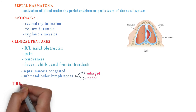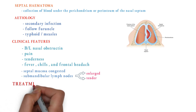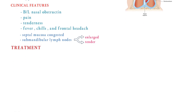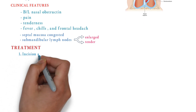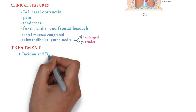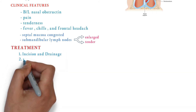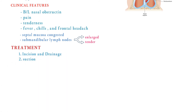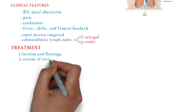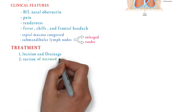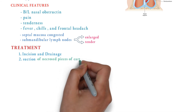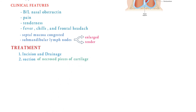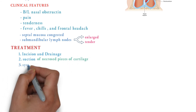In treatment, we incise the abscess and drain it. Pus and necrosed pieces of cartilage are removed by suction. After that, we give systemic antibiotics to prevent further infection.